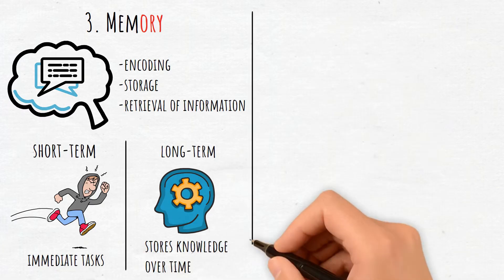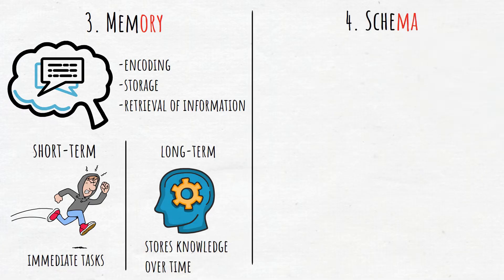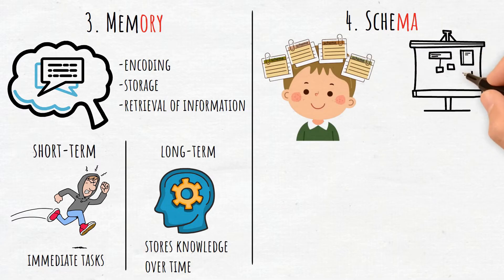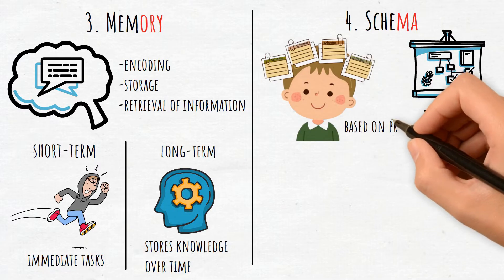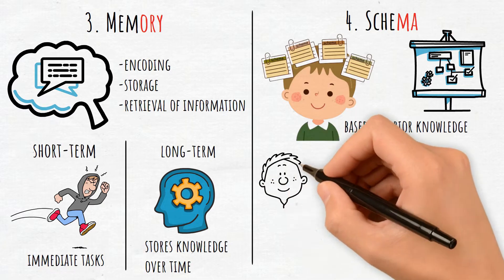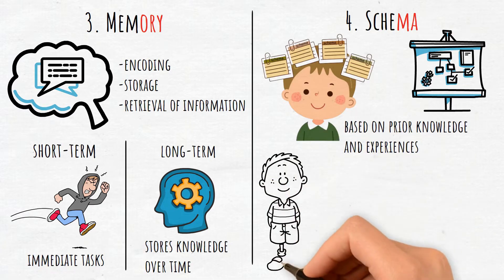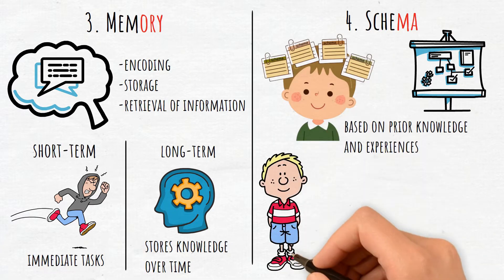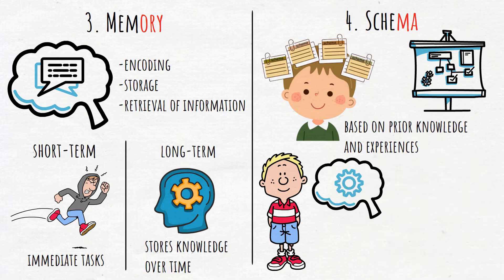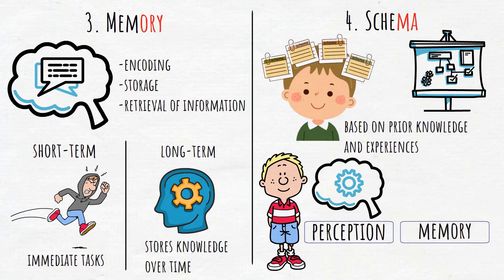4. Schema. Schemas are mental frameworks that help organize and interpret information based on prior knowledge and experiences. They allow individuals to make sense of new information more quickly by fitting it into existing cognitive structures. Schemas influence perception, memory, and problem-solving.